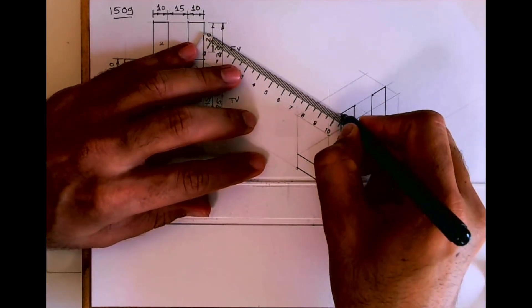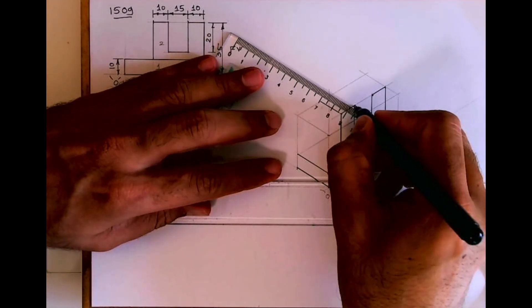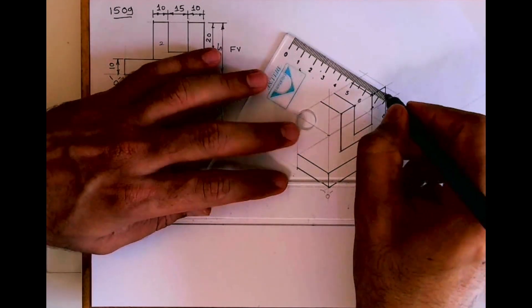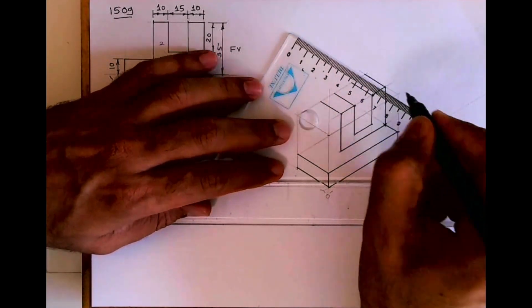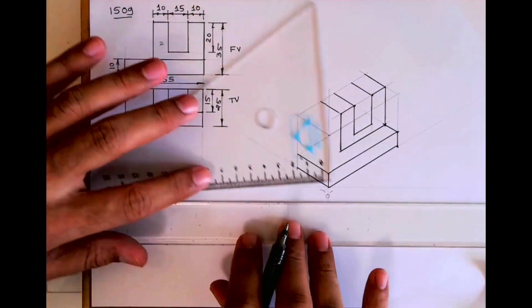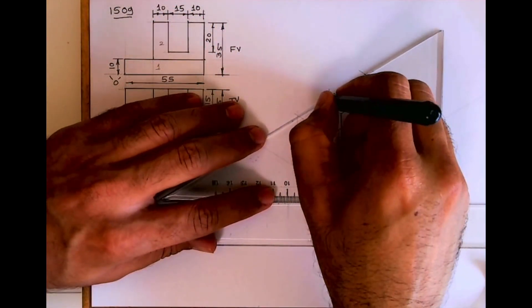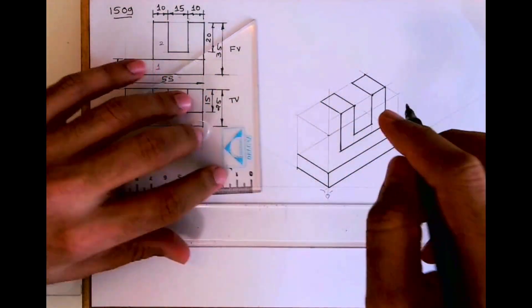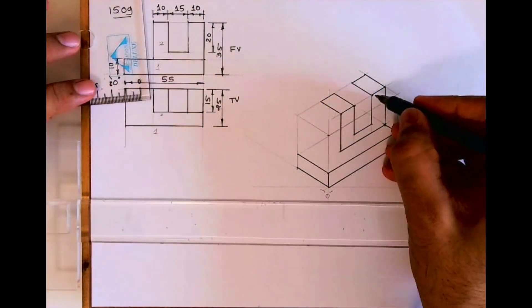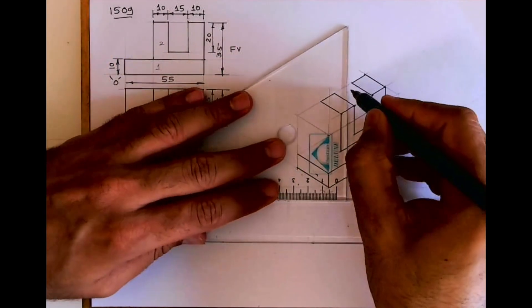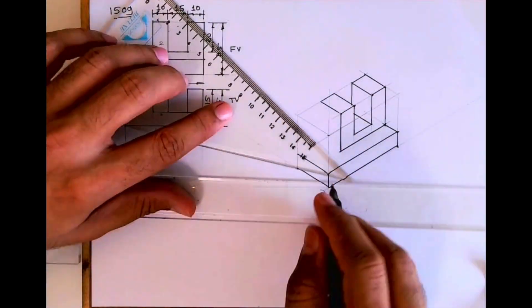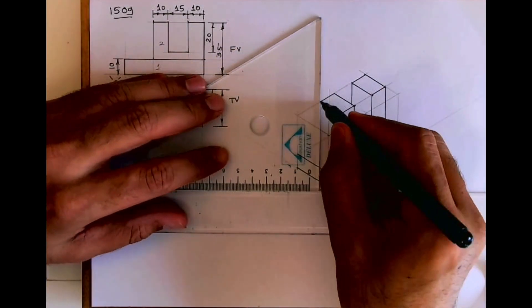So take 15, 15, 15, 15. This is dark, see this. Now whatever is there in the front, that is same behind also. So you go behind like this and you draw line like this. From here also you draw vertical line.